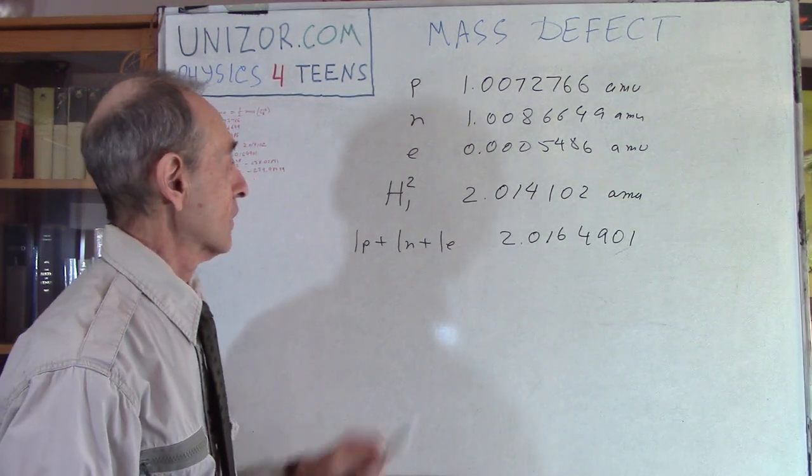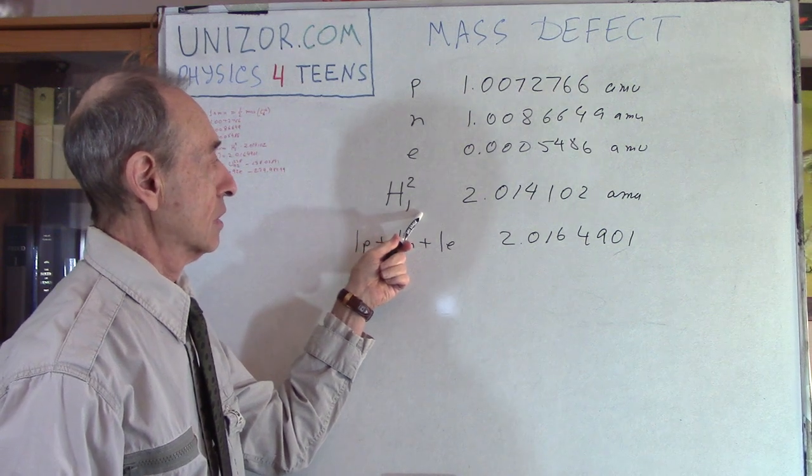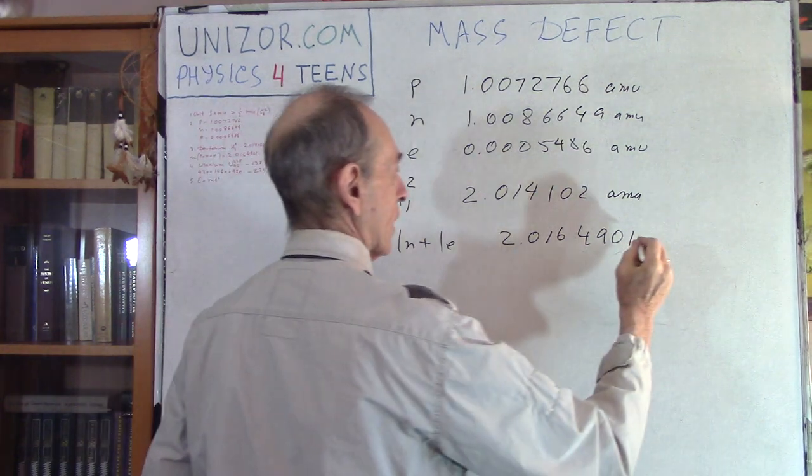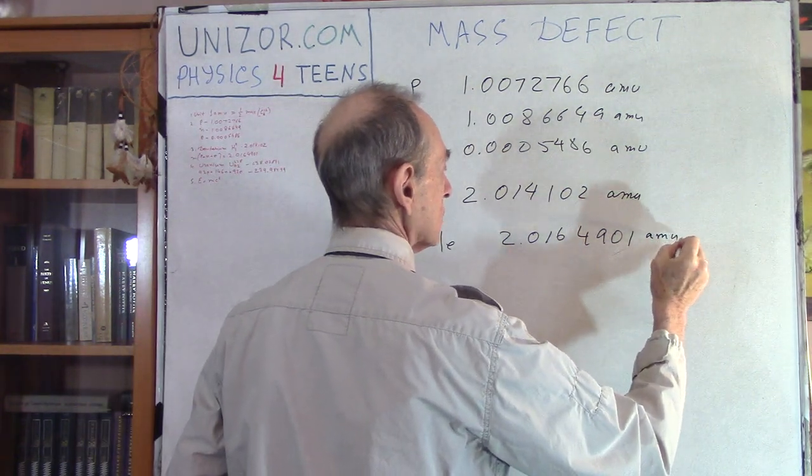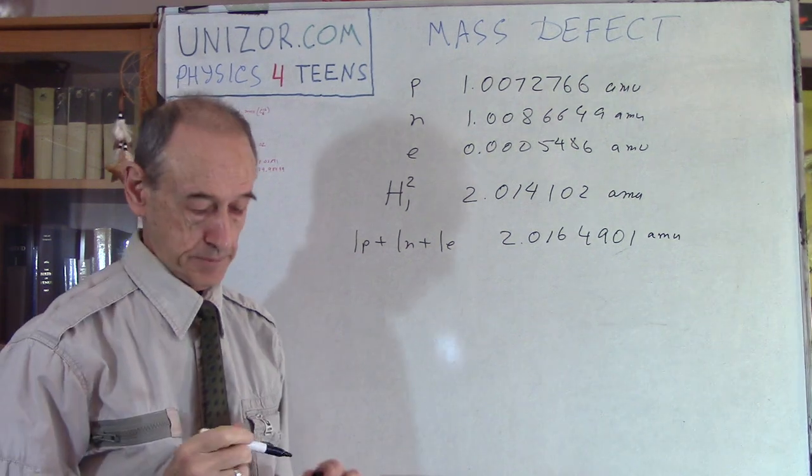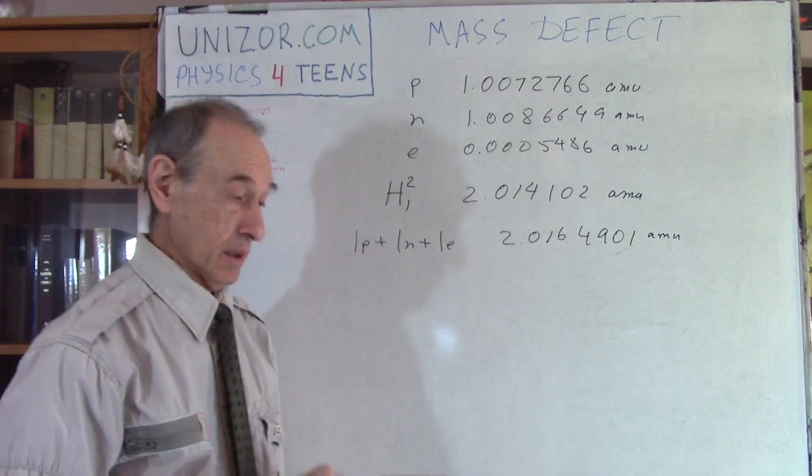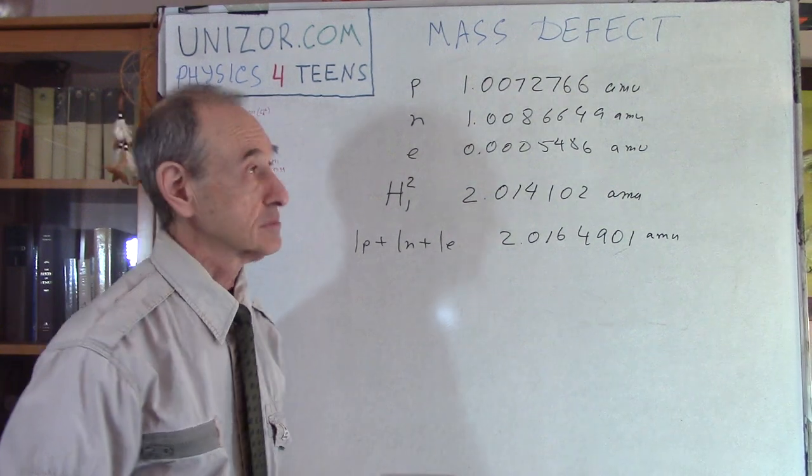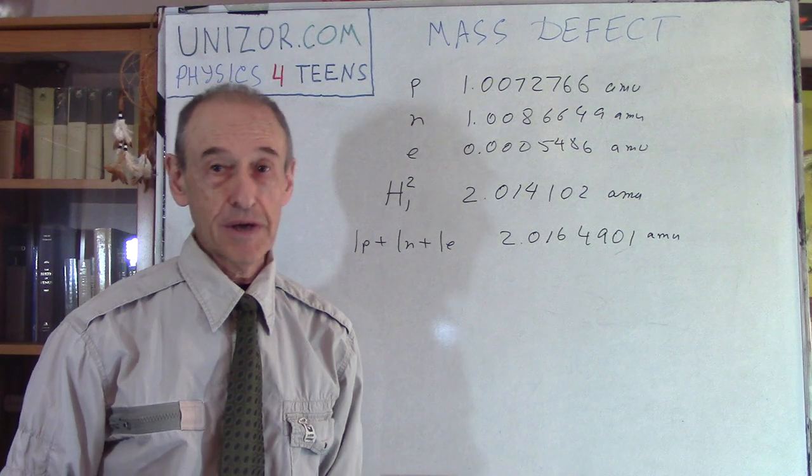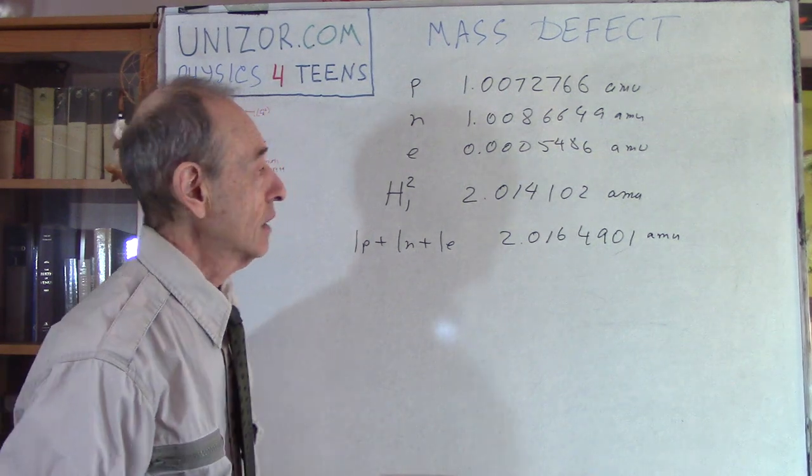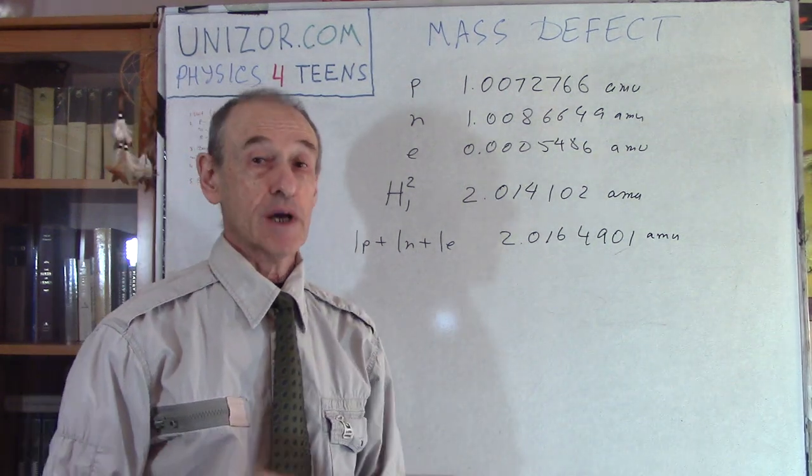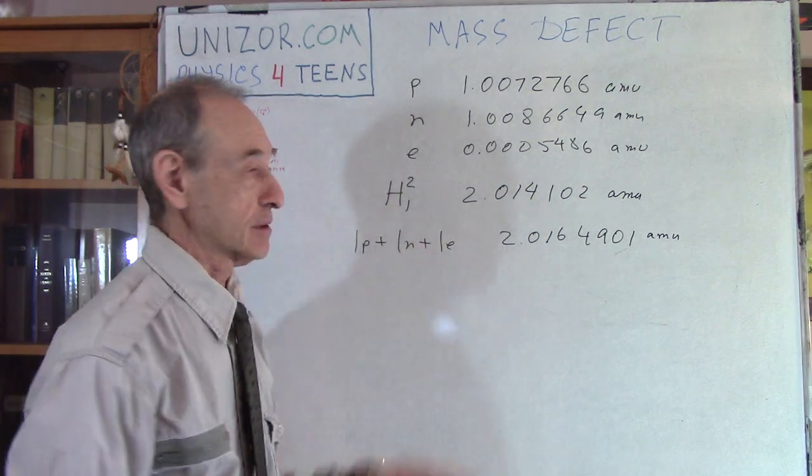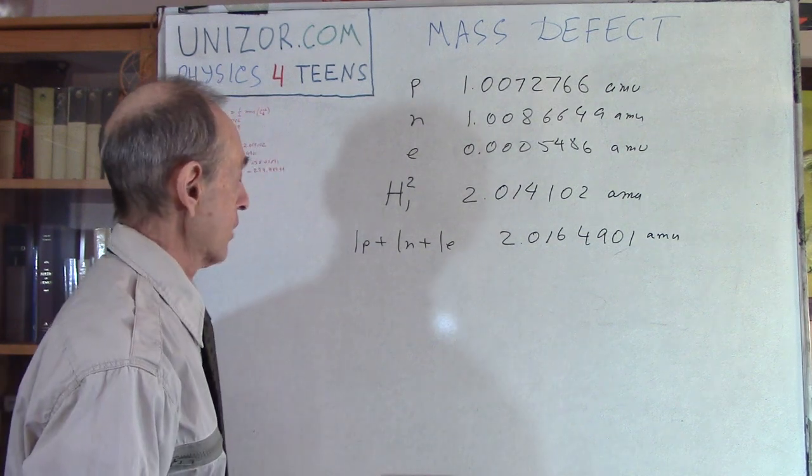and we will get 2.016490. I counted, that's a true number. So it looks like the atom of deuterium is 2.014 AMU, but the sum of its components is more than that. Well, that's kind of strange, but that's the fact. That's something which is called mass defect. Maybe it's a strange circumstance related only to this atom of deuterium.